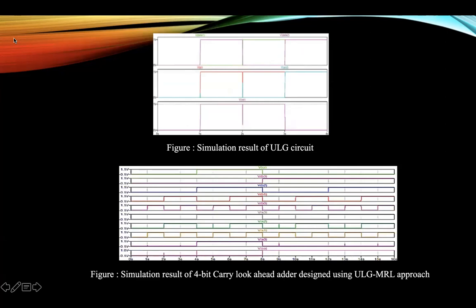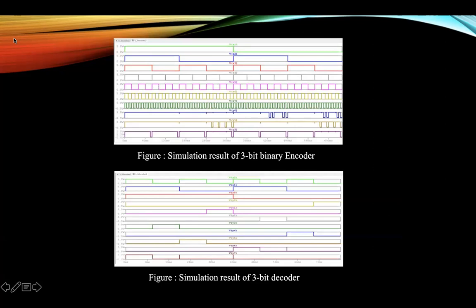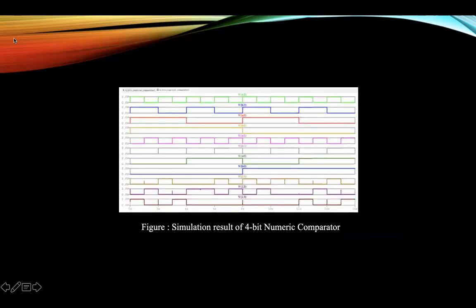Here is the ULG circuit, where the pink and green colored signals above represent the input signals, and below, the red, blue, and pink signals represent the OR and XOR signals respectively. The next figure represents the 4-bit carry look-ahead adder designed using the MRL approach, where CI is the lowest bit carry, B3 to B0 is consistent with A3 to A0, VS3 to VS0 are the output sum bits from highest to lowest, and VC0 is the highest bit carry. Similarly, simulation results of a 3-bit binary encoder, 3-bit binary decoder, and 4-bit numeric comparator are presented, and the relationship between input and output of all signals is consistent with the truth table.